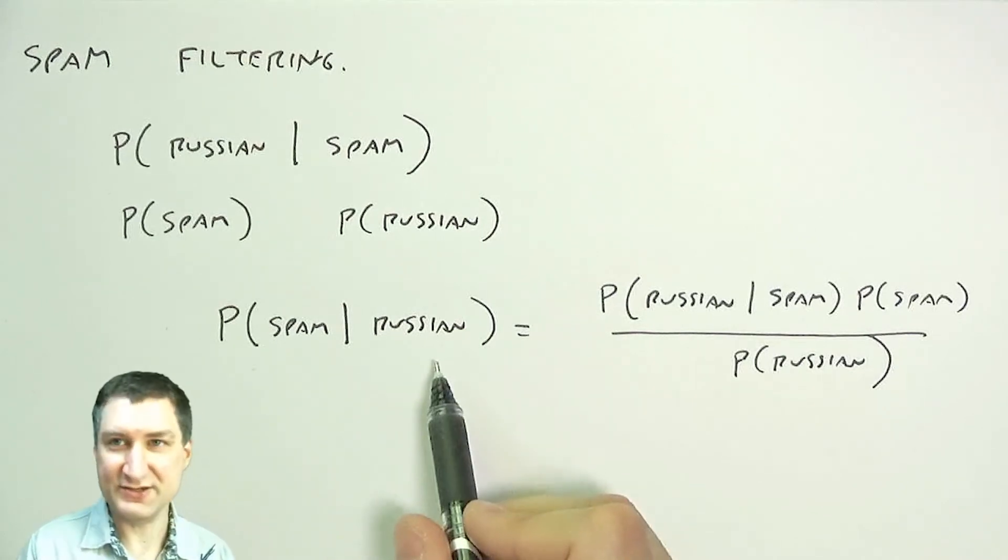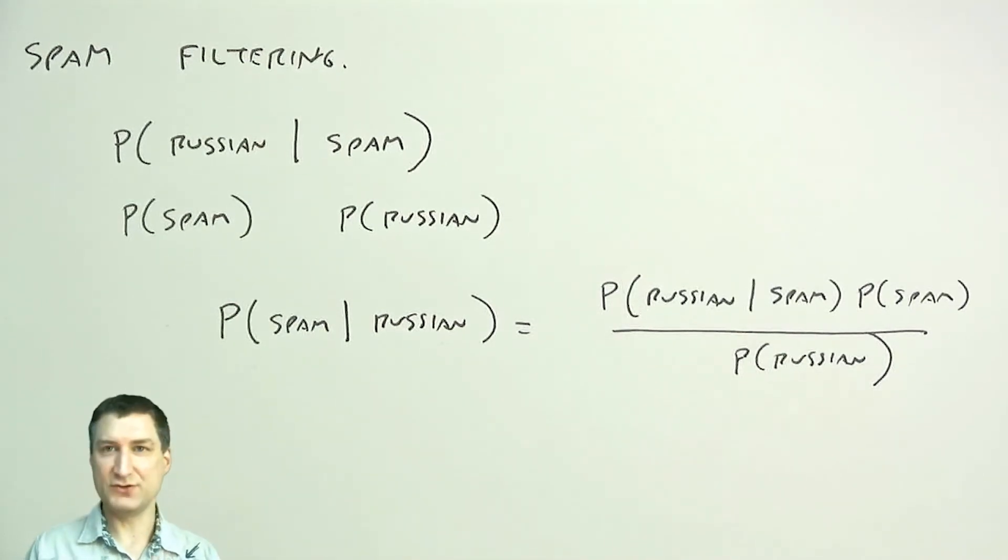And if this probability is high enough, then it applies a rule to automatically move Russian mails to the spam folder. And we're going to do some other examples of Bayes' rule in the next video.